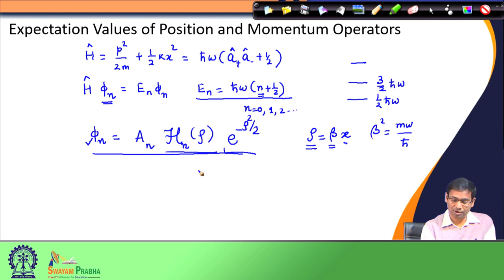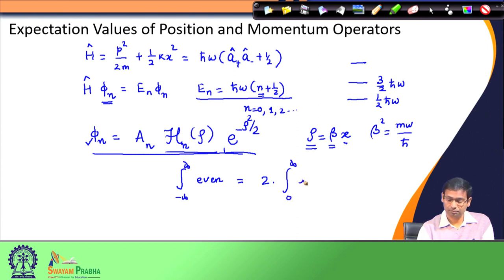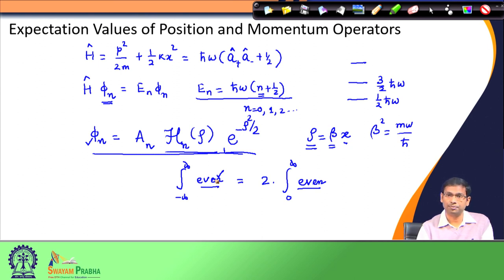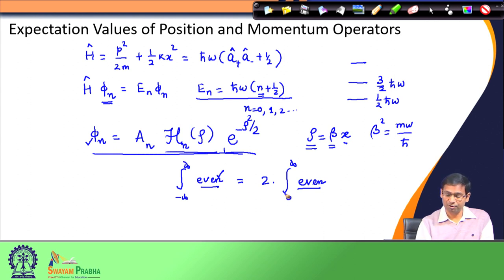When we have an even function and we want to integrate it from minus infinity to plus infinity, we can separate the integral into two regions: one from minus infinity to 0, and the other from 0 to plus infinity. Since the function is even, the area under the curve is the same for both regions. Therefore, instead of integrating from minus infinity to plus infinity, we can write it as 2 times the integral from 0 to plus infinity.